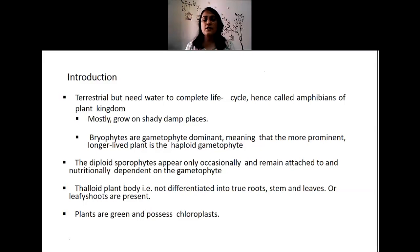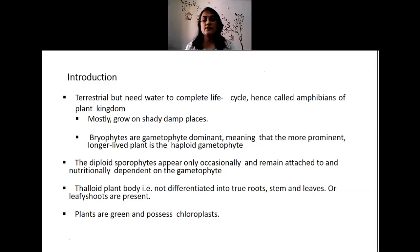The bryophyte plant body is a gametophyte. In bryophytes, the gametophyte is the dominant phase in the life cycle — the longer-lived, haploid gametophyte. The diploid sporophytes are found in bryophytes but appear only occasionally and remain attached to the thallus or the gametophyte plant body, dependent on it both for attachment and for nutrition.